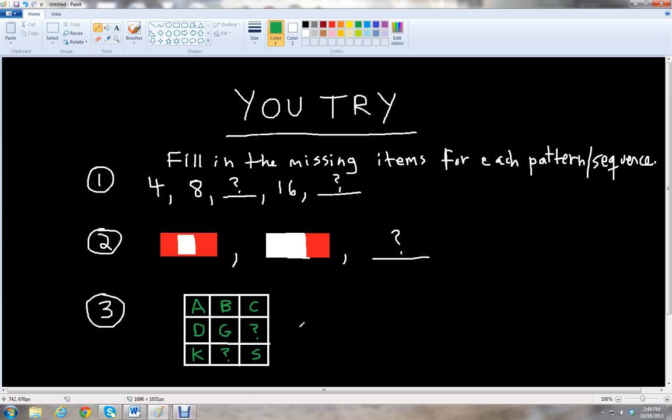And then the third problem, we have a pattern with letters and grid. And so we have in our front row, A, B, C, then we have D, G, then you fill in the missing letter. And then we have K, missing letter, and S. So you need to find those two missing letters. And I'll give you some time to work on that. Feel free to pause the video, you can rewind if you want to go back and review what patterns and sequences are. And then we'll go over the answers.